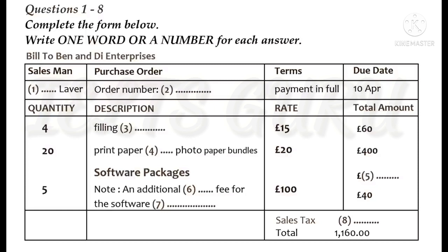Before we go any further, can we just confirm what has been agreed so far, as it's starting to get a little complicated? Tell you what, why don't I start to make out the invoice? Should I address it to you personally, or is there a business name you'd like me to use? We trade under the name Ben and Di Enterprises.